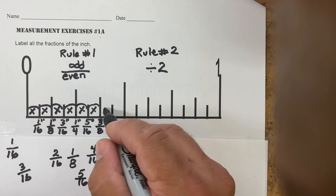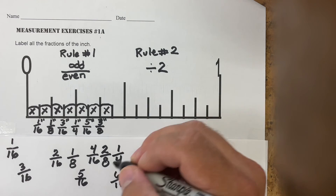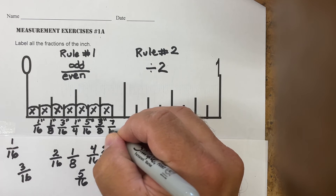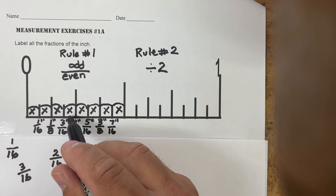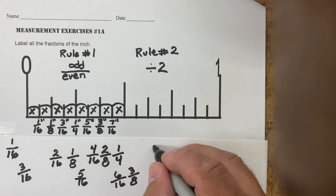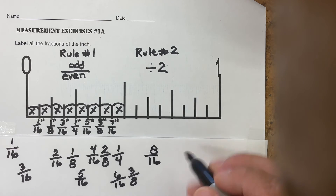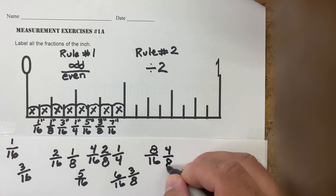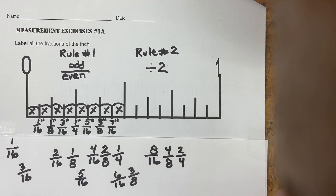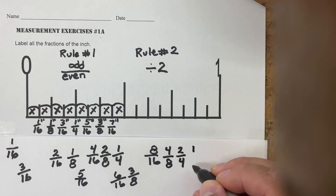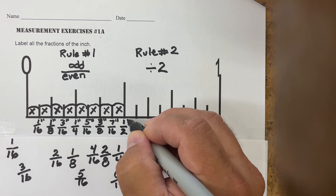The next one is seven sections out of a possible 16. Seven over 16 is already odd over even, so the final answer is seven-sixteenths of an inch. The next one is eight sections out of 16. That's not odd over even, so I divide by two: eight over 16 → four over eight → two over four → one over two. That's why this measurement is one-half of an inch.